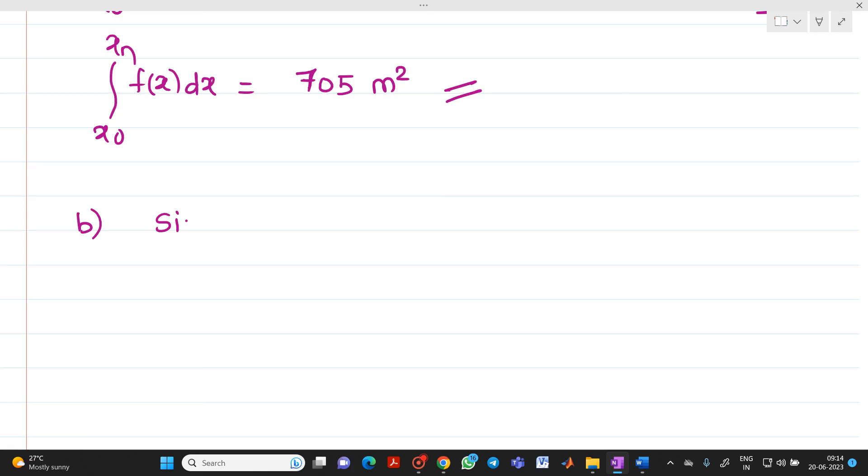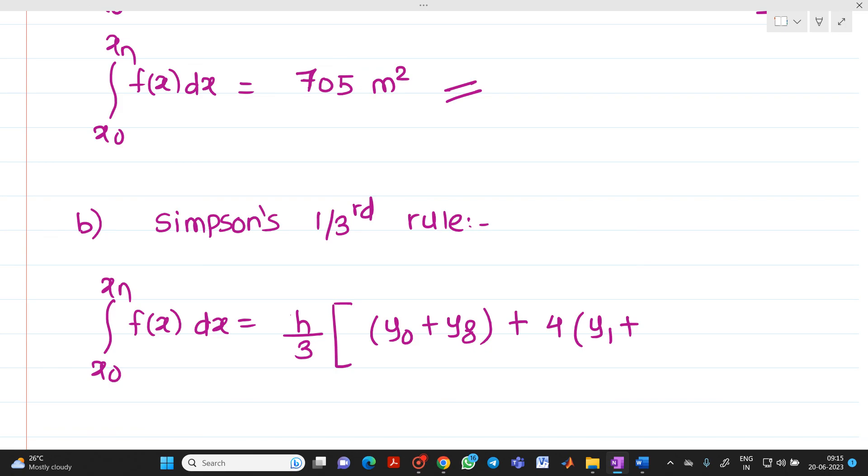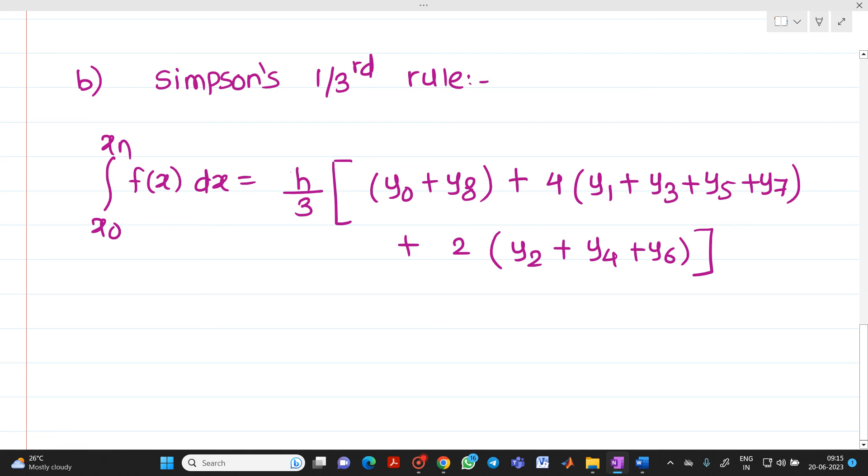Next, we have to solve the same numerical by Simpson's one-third rule. What is the formula? Integration x0 to xn of f(x) dx equals h by 3 into bracket: sum of first and last ordinates y0 plus y8, plus 4 into sum of odd terms y1 plus y3 plus y5 plus y7, plus 2 into sum of even terms y2 plus y4 plus y6.